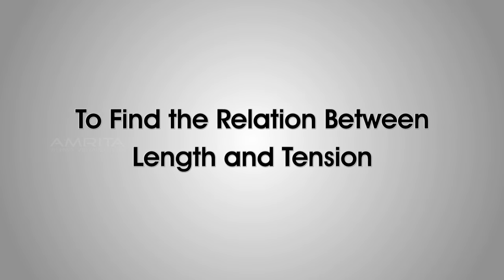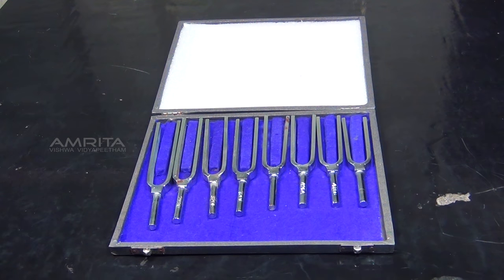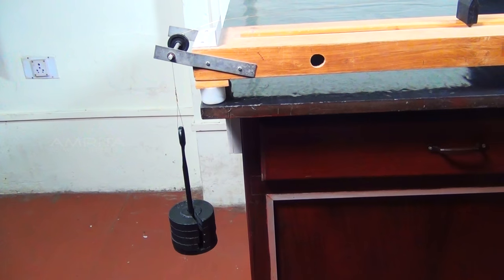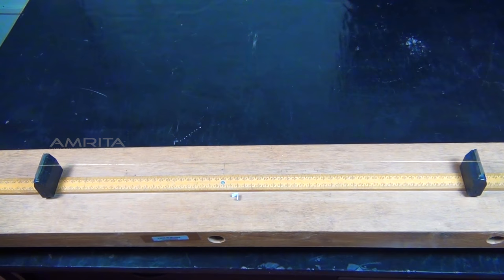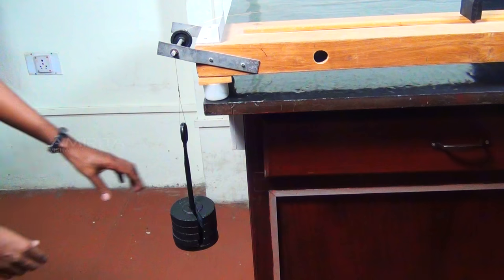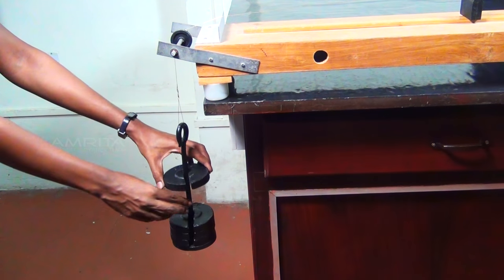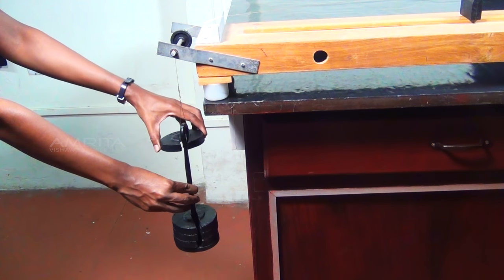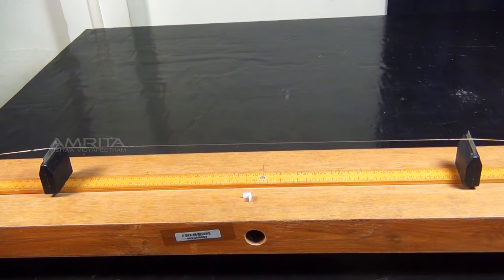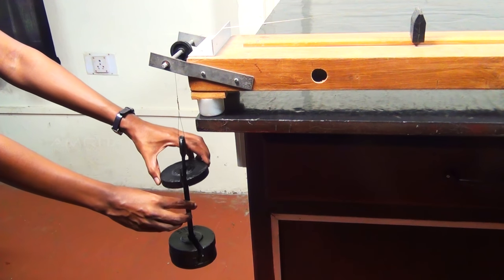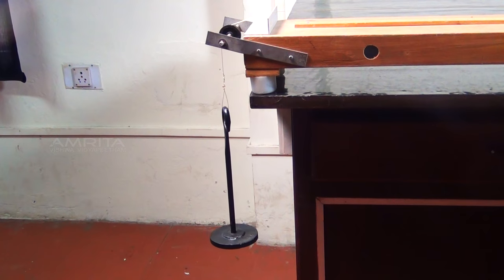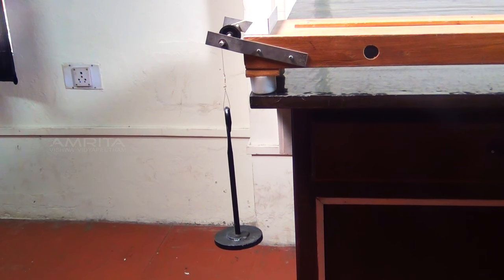To find the relation between length and tension, select a tuning fork of known frequency. Set the load in the weight hanger as the maximum. Find the resonant length L. Now, remove 0.5 kg weight from the weight hanger and find resonant length with the same tuning fork. Repeat the experiment by removing the slotted weights one by one in equal steps of 0.5 kg.